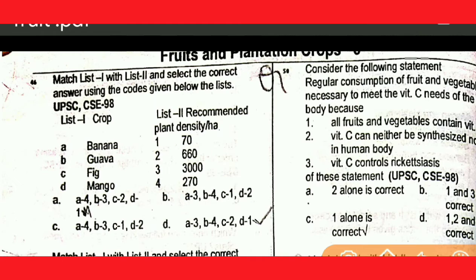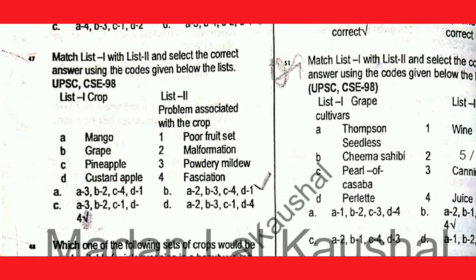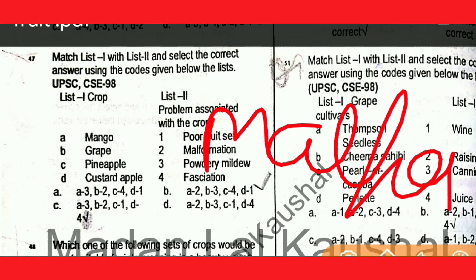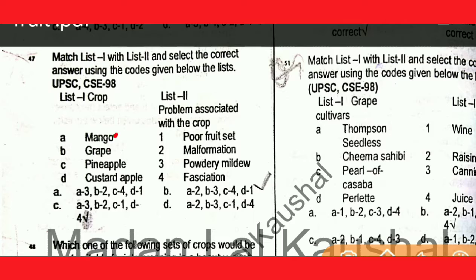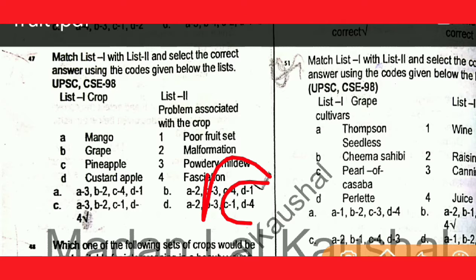According to the plant density result, the major problem associated with mango is malformation; with grape it is powdery mildew; with pineapple it is poor fruit set; and with custard apple it is poor pollination. Option B is correct.